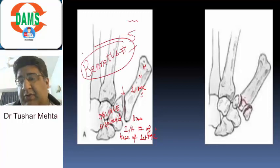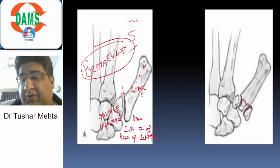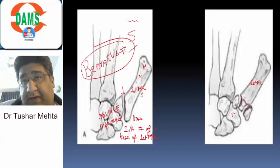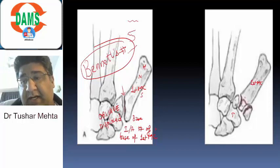Let's switch over to the next one. Trapezium, first metacarpal. The fracture is not again in the trapezium — it is in the first metacarpal. It is not in the head, not in the neck, not in the shaft. It is in the base.